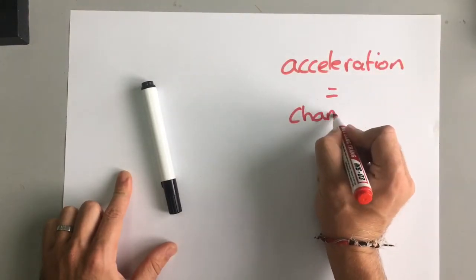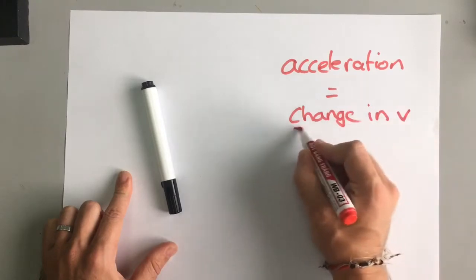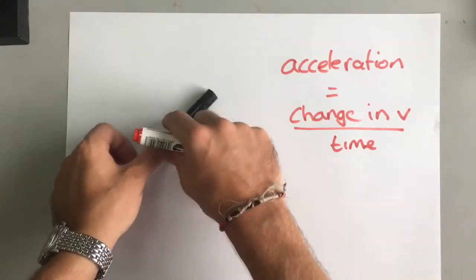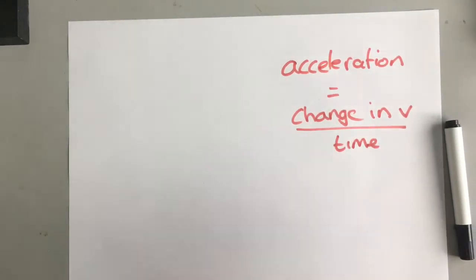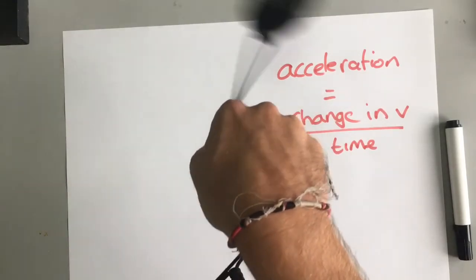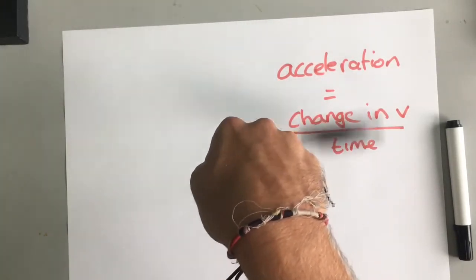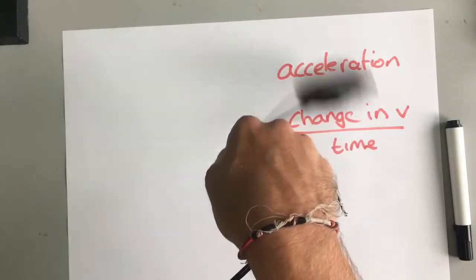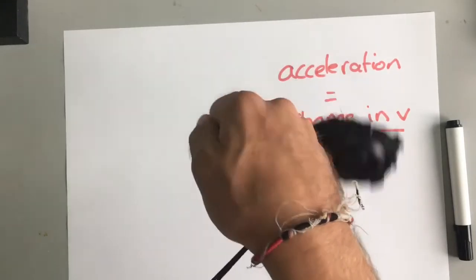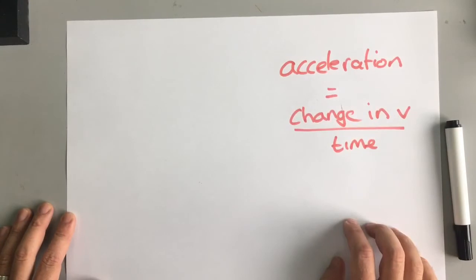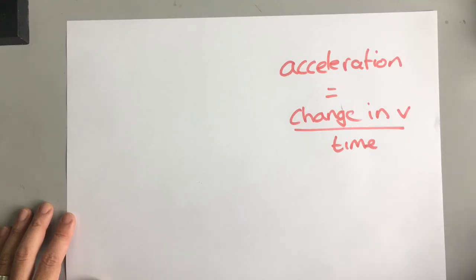Acceleration is change in velocity over time. So if the velocity is changing, the object must be accelerating. Even if you have something moving in a circle at a constant speed — its speed is not changing, but its velocity is changing — that means it's accelerating. So it is possible to have something moving at a constant speed but still accelerating, and that's if it's moving in a circle. That's an important difference between speed and velocity.